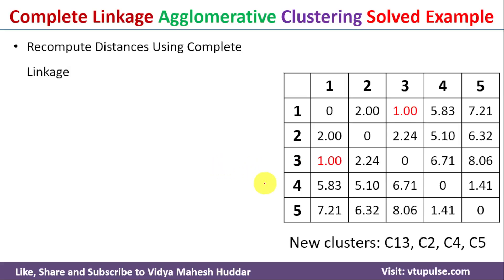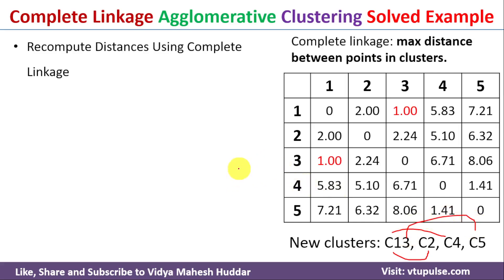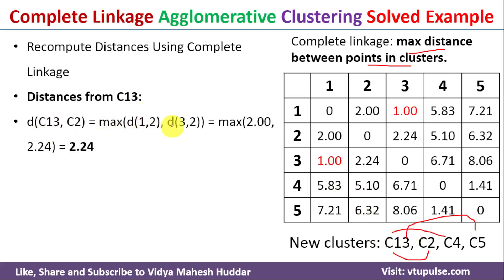We need to recompute the distance using complete linkage between cluster C13 to C2, C13 to C4, and C13 to C5. In complete linkage, the distance between clusters is the maximum distance between any two points in the clusters. For C13 to C2, we find the maximum of distance from data point 1 to 2 (which is 2) and data point 3 to 2 (which is 2.24). The maximum is 2.24, so the distance between C13 and C2 is 2.24.